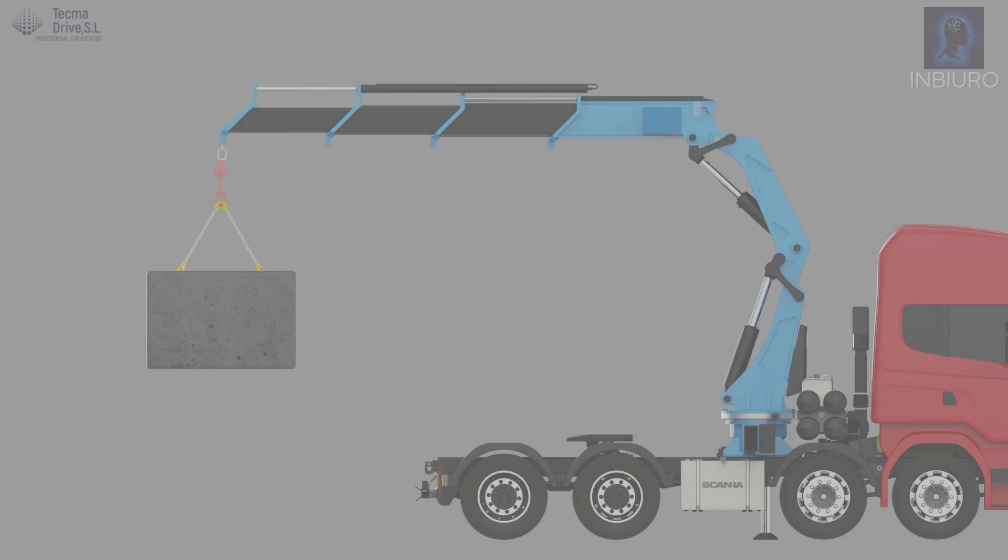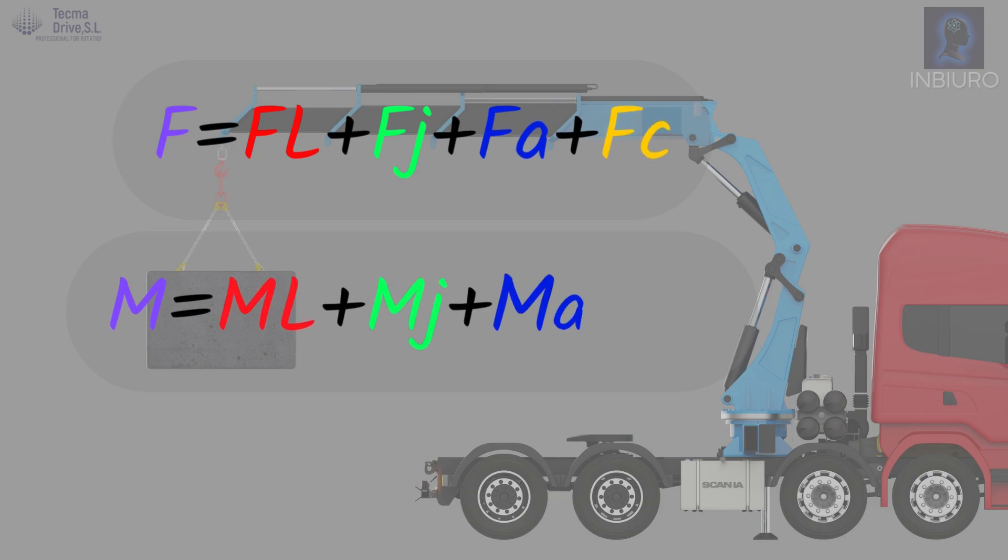Once we have everything, we can calculate the total axial load and tilting moment acting on the bearing, bearing in mind that the moment from column MC acts opposite to the other moments in this case.